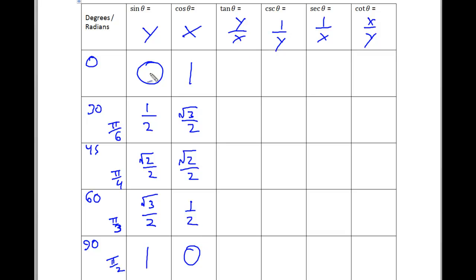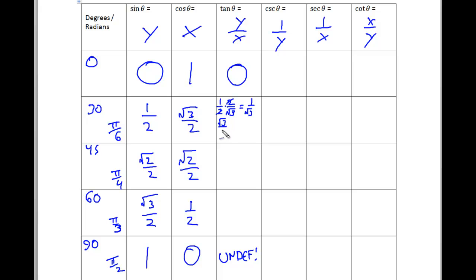For tangent of 30 degrees: y over x is 1 half divided by square root of 3 over 2. Dividing fractions — skip, flip, and multiply. These 2s divide to make 1, so we have 1 over square root of 3. We can't leave a radical in the denominator, so multiply top and bottom by square root of 3. That gives square root of 3 over 3, which is the tangent of 30 degrees, or pi over 6. For tangent of 45 degrees, square root of 2 over 2 divided by square root of 2 over 2 is 1 — anything divided by itself is 1.